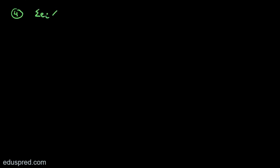In this video, we are going to discuss the remaining two useful results of OLS. The fourth useful result is: summation Eᵢ multiplied by Xᵢ is equal to 0.